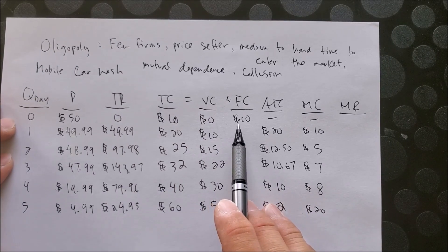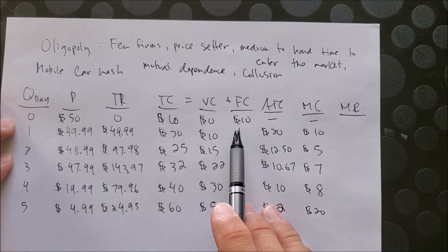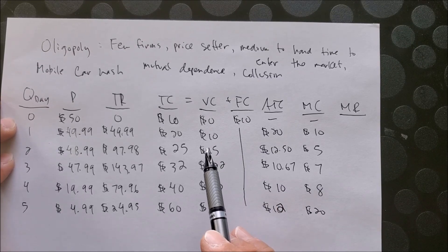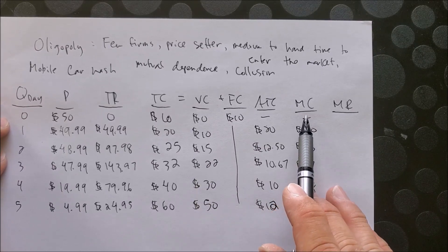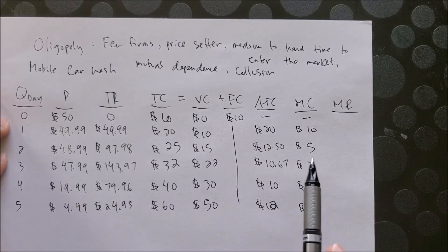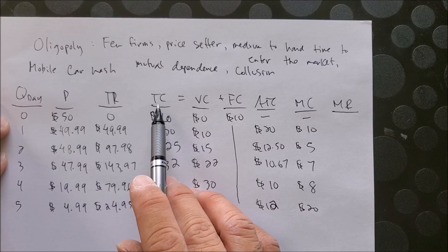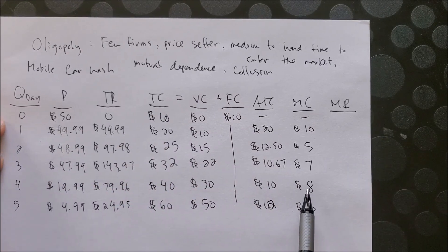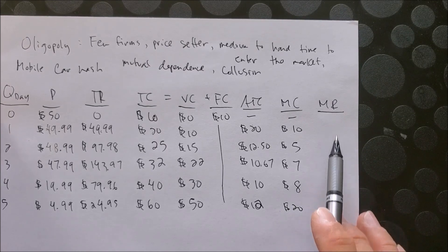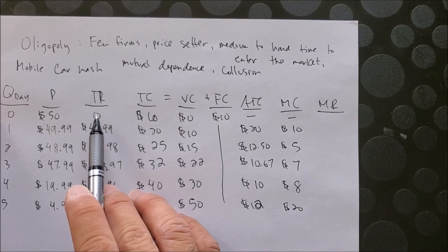Our marginal cost again has not changed. It is the change in total cost over the change in quantity—our MC. And now we can calculate our marginal revenue, which would be the change in total revenue over the change in quantity. Let's do that now.